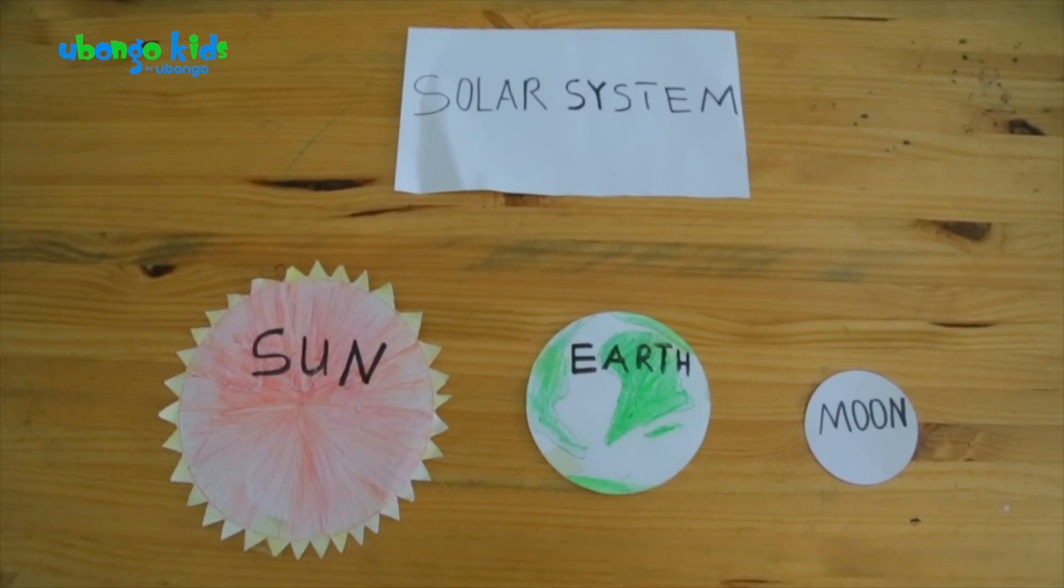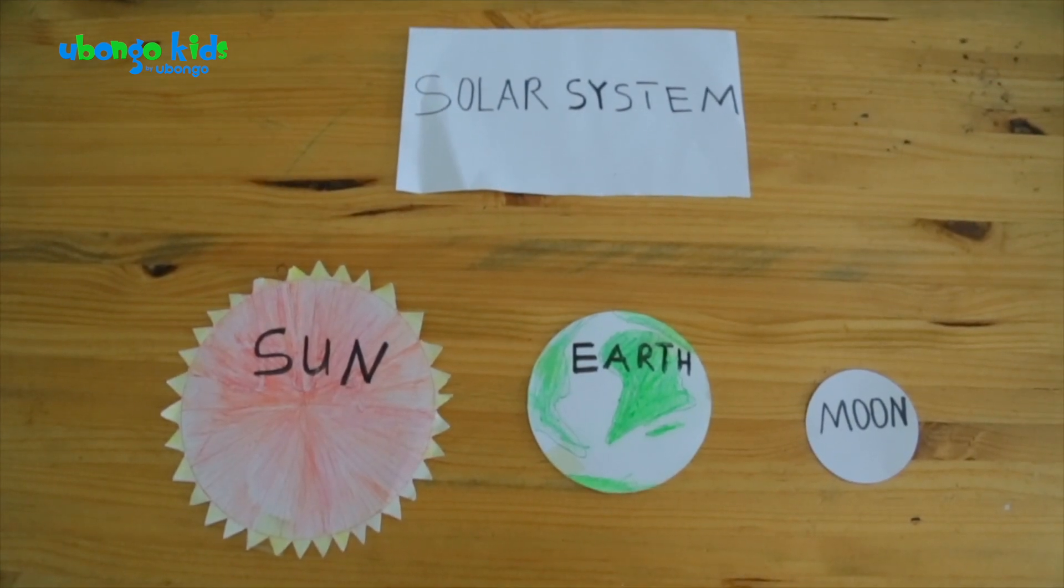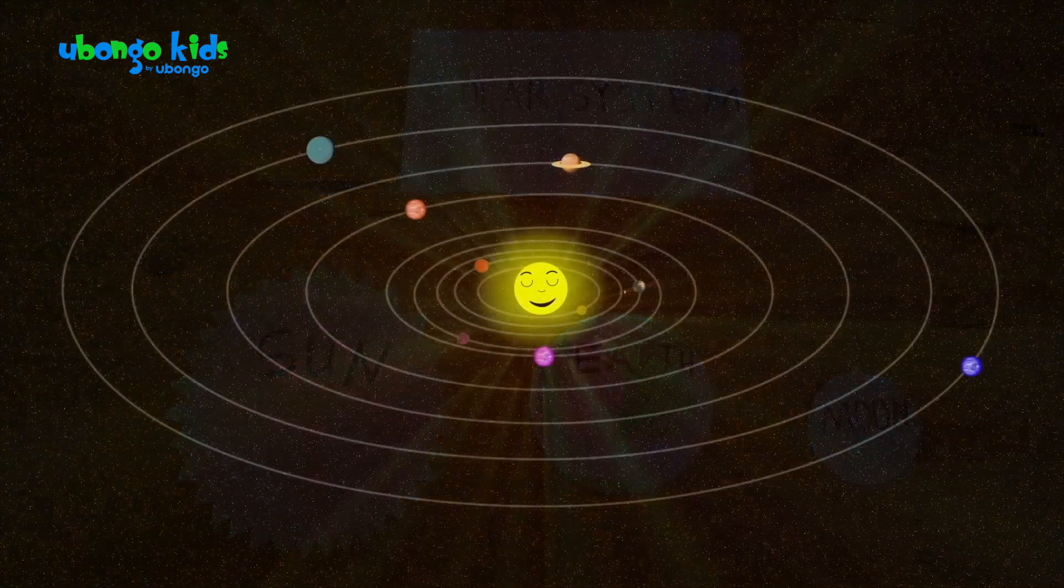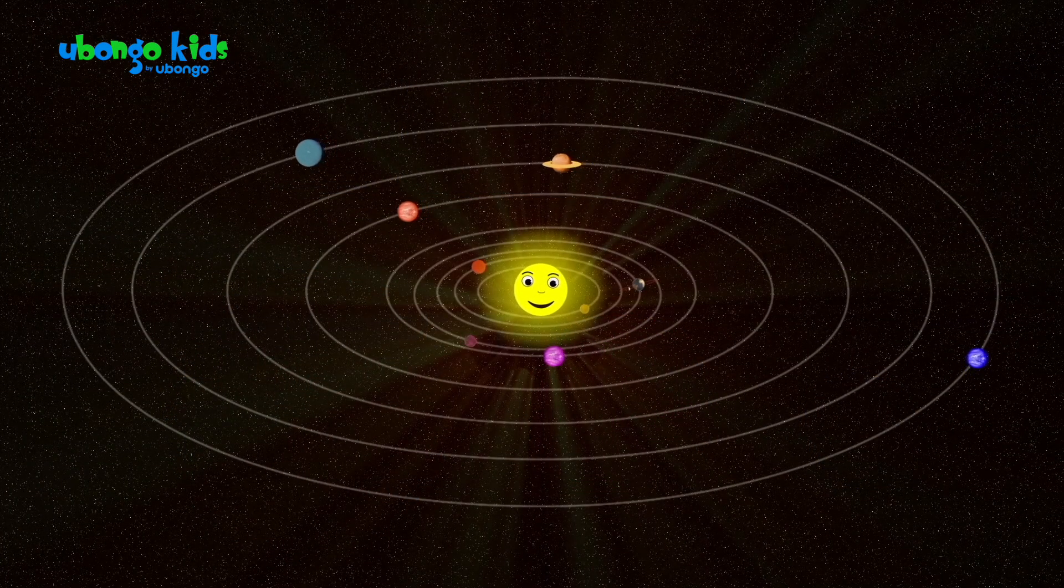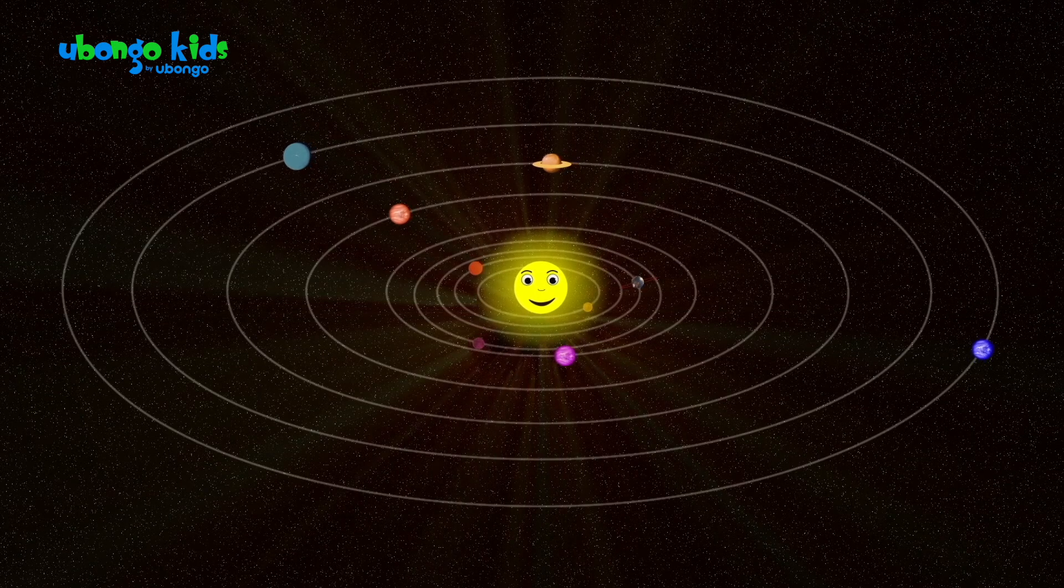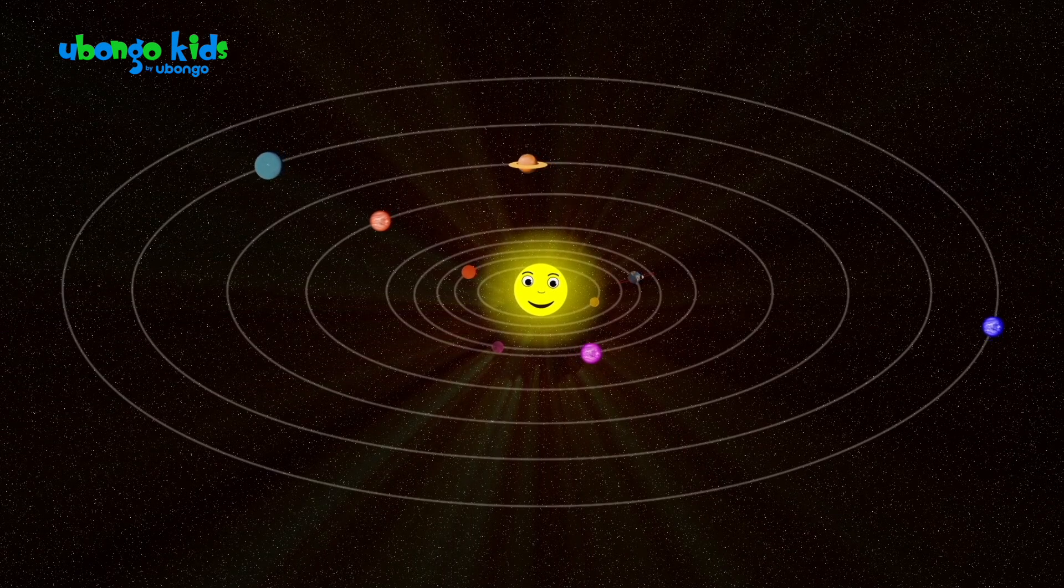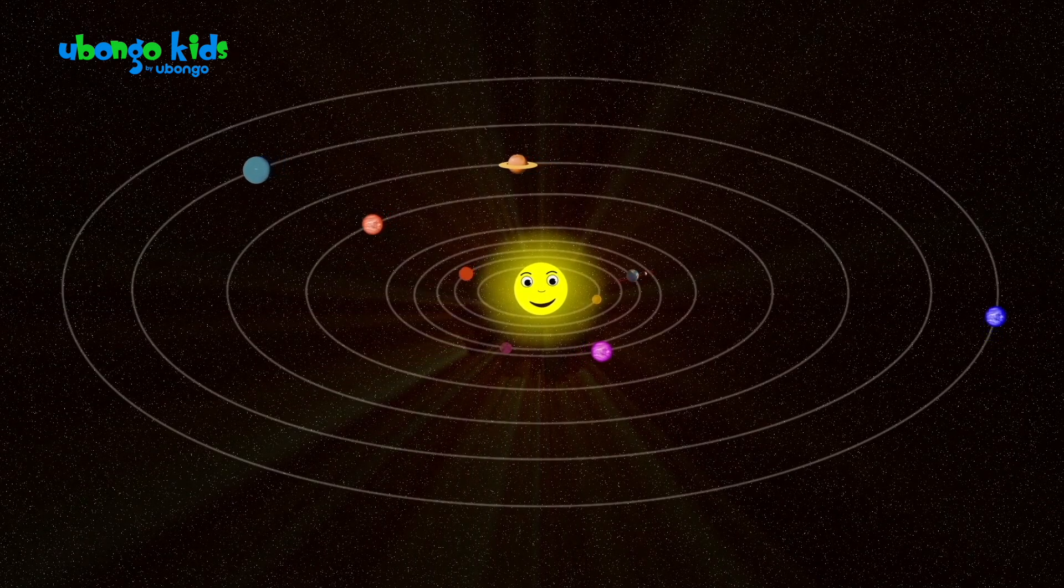Why not try this experiment at home yourself and see how our unique solar system works. And kids, remember, orbiting is happening every single day and is part of what makes our solar system unique. Thanks for learning with us, kids. Join us next time for another fun experiment.